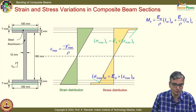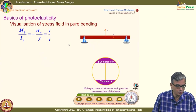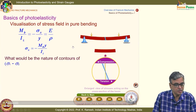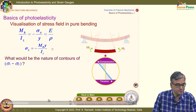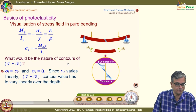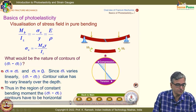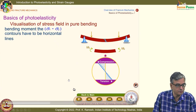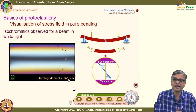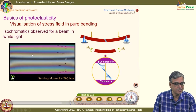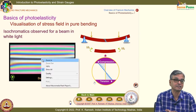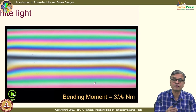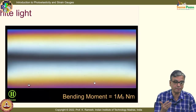We have also looked at basics of photoelasticity. With knowledge of stress, strain, and principal stresses, what would be the nature of contours of σ_1 − σ_2? We have σ_1 = σ_x and σ_2 = 0 in one section of the beam. Since σ_x varies linearly, σ_1 − σ_2 contour values always remain positive, and if you plot them analytically, you get essentially parallel lines, also verified by photoelastic experiment.